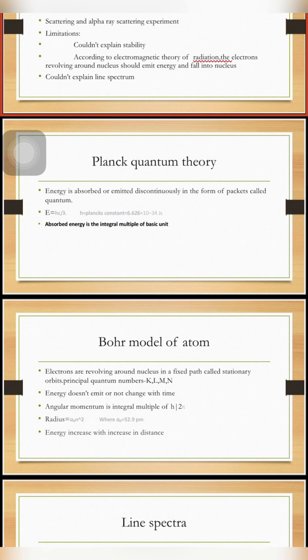The Bohr model of atom: Electrons are revolving around nucleus in a fixed path called stationary orbit. Principal quantum numbers K, L, M, and N designate these orbits.